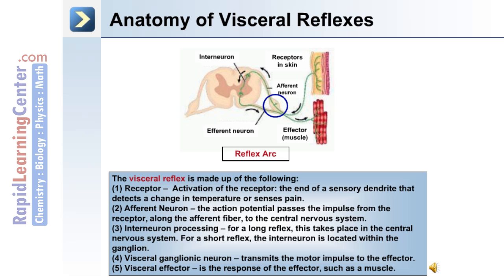For a short reflex, the interneuron is located within the ganglion. Number four is the visceral ganglionic neuron, which transmits the motor impulse to the effector. Number five is the visceral effector, which is the response of the effector, such as a muscle.